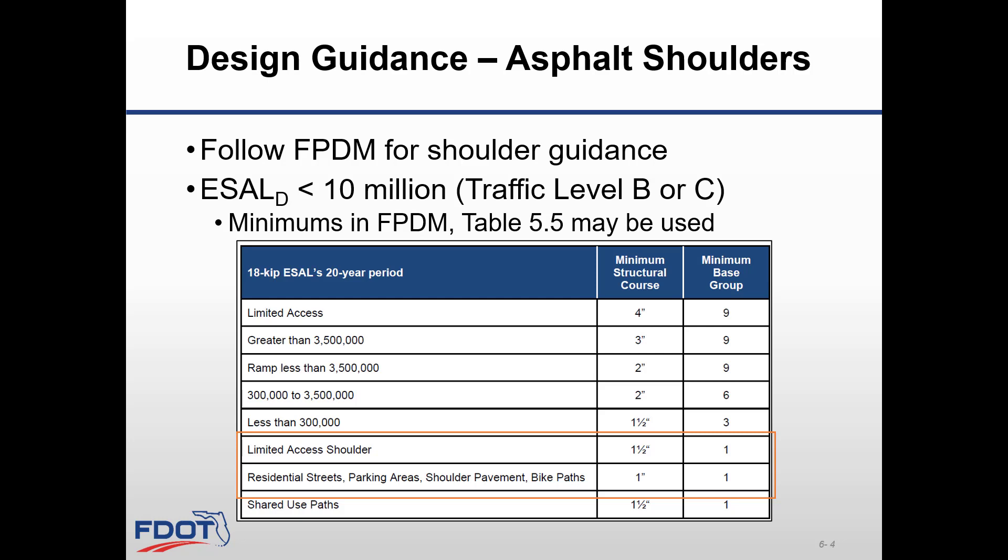These values assume that a stabilized subgrade is used in conjunction with Optional Base Group 1. Oftentimes, the pavement evaluation process will indicate that the shoulder was stabilized during the original construction of the road, and additional stabilization is therefore not needed. However, if there is no existing stabilization under the shoulder and stabilization is not proposed, you will need to determine the type of materials in the embankment and evaluate the need for increasing the shoulder base and structural course.